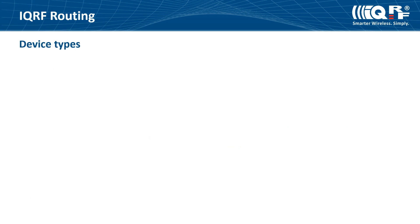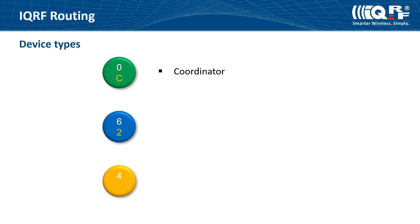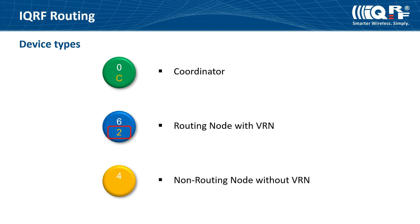The next slide shows how IQRF routing works. The coordinator is represented as a green circle with a logical address of 0. Individual nodes are shown either as blue or yellow circles. Blue nodes symbolize those devices that are involved in routing in the network and they have virtual routing numbers, or VRNs for short, assigned — these are the bottom numbers in circles. VRN was assigned to a node during the discovery process when physical network topology was discovered. Every routing node routes in the same time slot corresponding to its VRN address. Yellow nodes don't participate in routing and they don't have VRNs assigned.